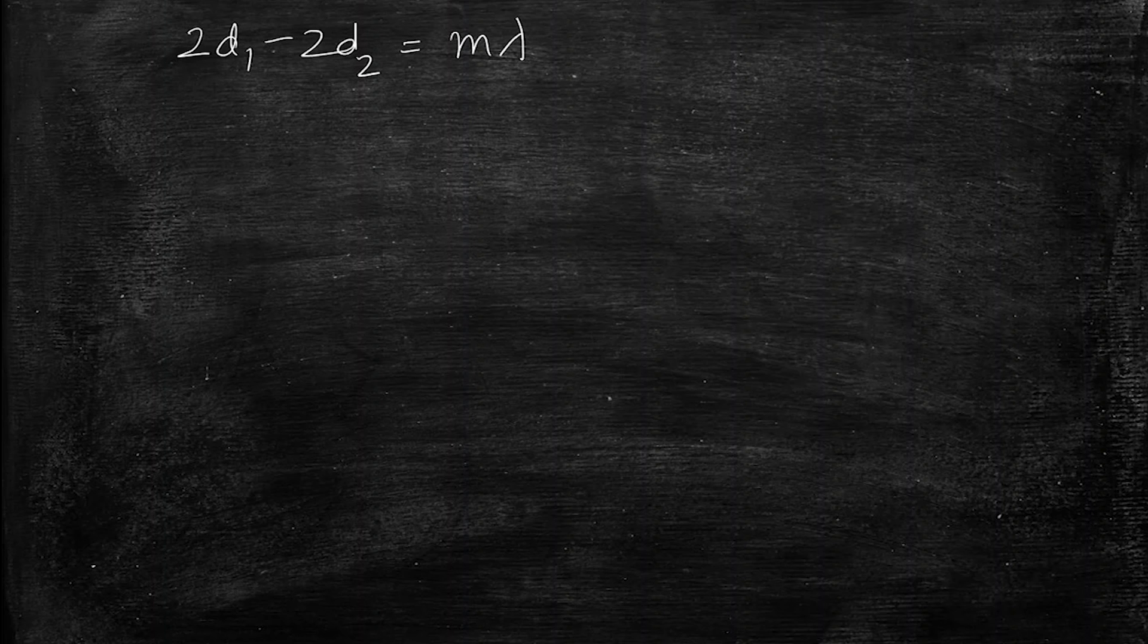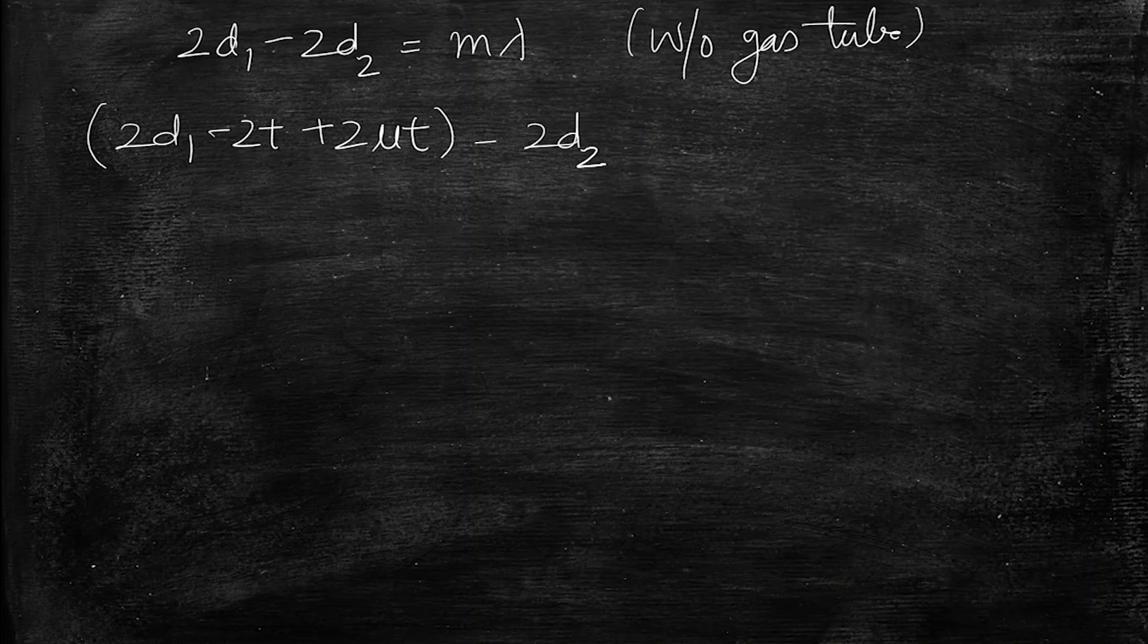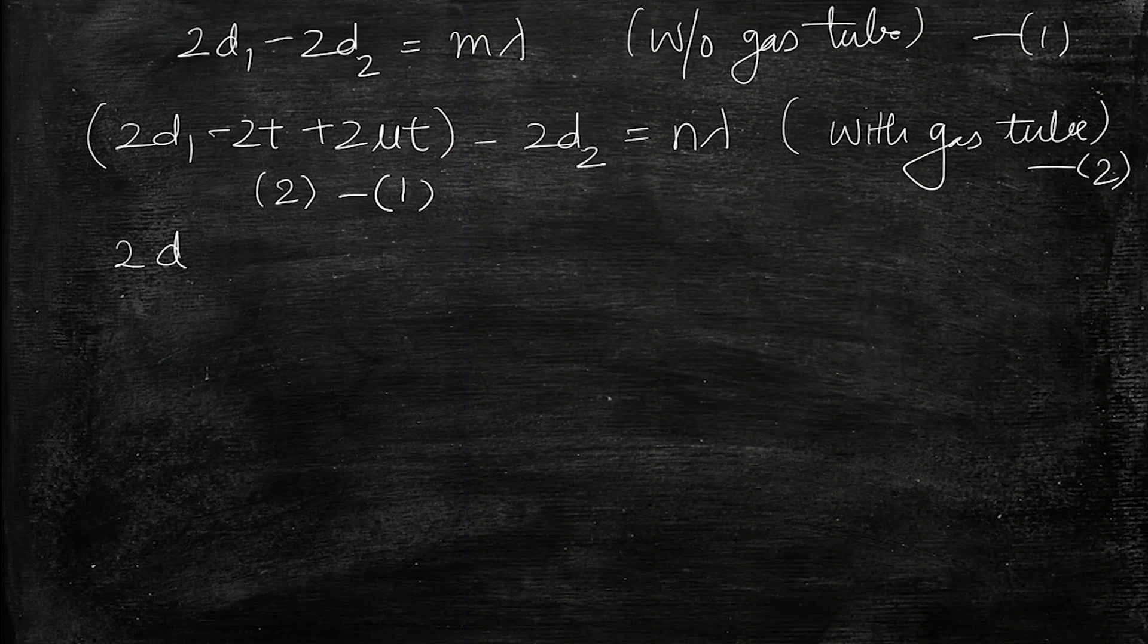So writing down the two equations from two cases: first is 2D1 minus 2D2 is equal to M lambda, so it's without gas tube. And second is 2D1 minus 2T plus 2 mu T minus 2D2 into N lambda, so it's with gas tube. So we will subtract this one, this is 2, so we will subtract.